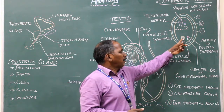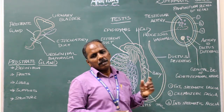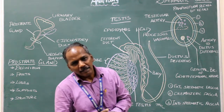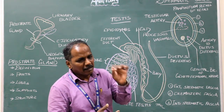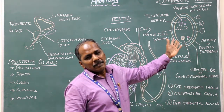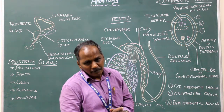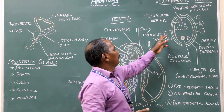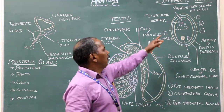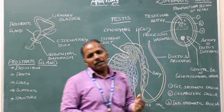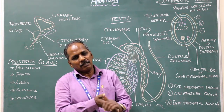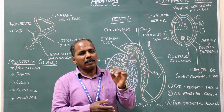Contents of the spermatic cord. Number 1: vas deferens or ductus deferens. Number 2: artery to the vas deferens. Number 3: genital branch of genitofemoral nerve. Number 4: remains of processus vaginalis. Number 5: testicular artery. Number 6: pampiniform plexus of veins. So these are the contents of the spermatic cord.